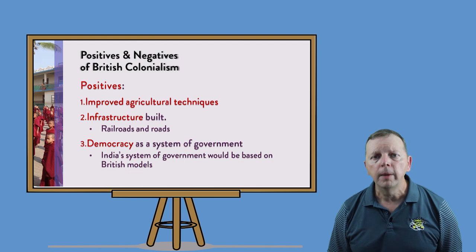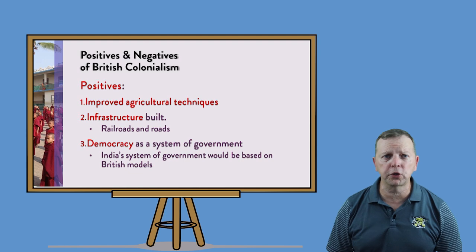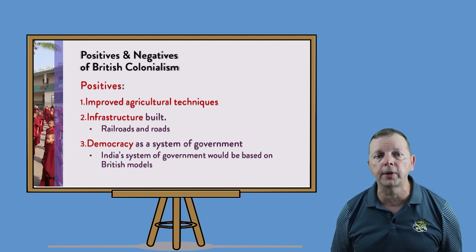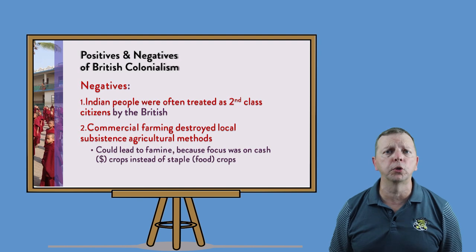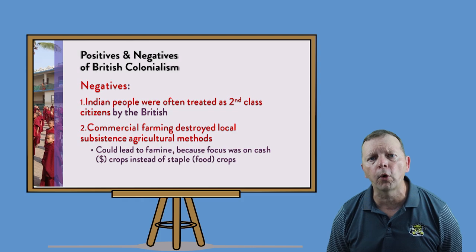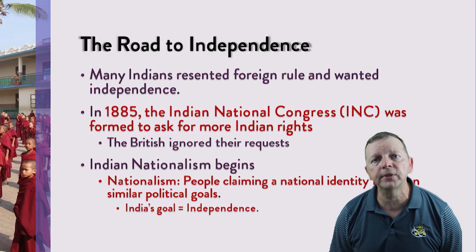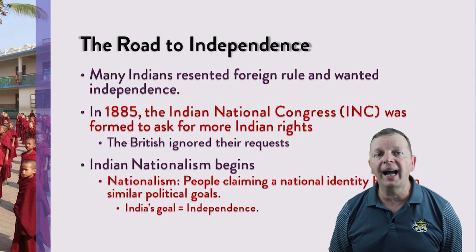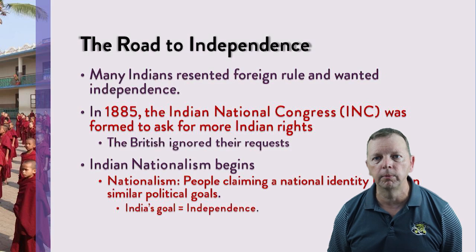As with many other regions of the world, British colonization came with advantages and disadvantages. The positives were that the British brought with them better ways to farm and produce food, built roads and even railroads throughout the subcontinent, and introduced democracy to the region. Unfortunately, the Indian people themselves were treated as second-class citizens. Also, the British changed agriculture in ways that made the region more prone to famine, because cash crops were prioritized over staple crops. This upset many Indians who wanted independence. In 1885, the Indians formed the INC, or the Indian National Congress, to demand rights from the British — demands that the British ignored.